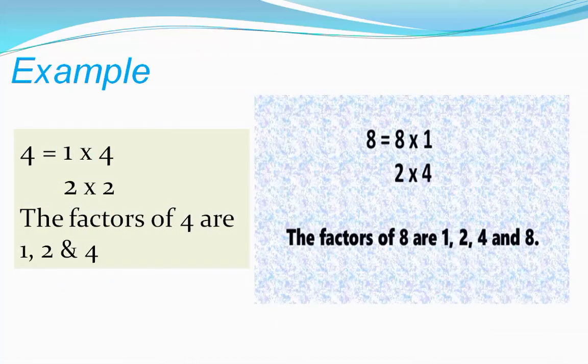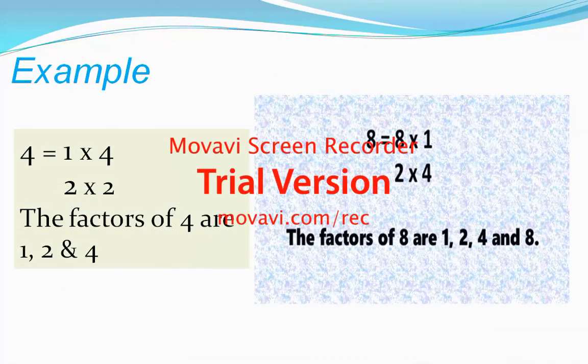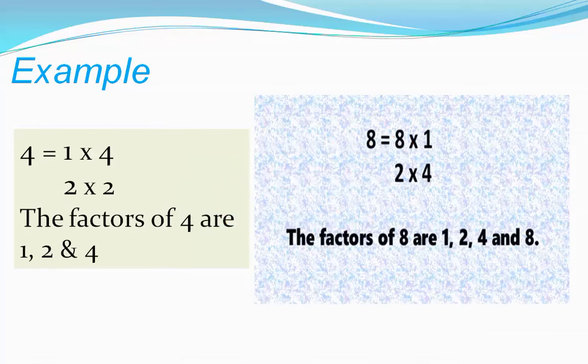Example: one times four is four, and two times two is four. So one, two, and four are factors of four. For eight: one times eight is eight, two times four is eight.